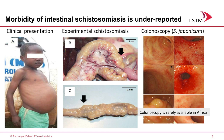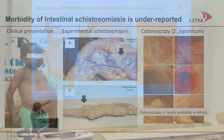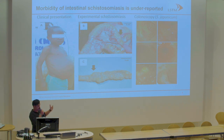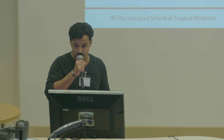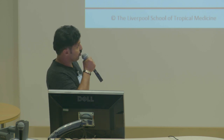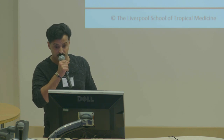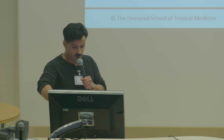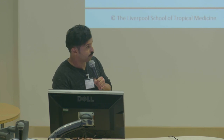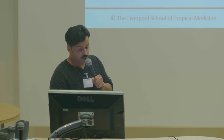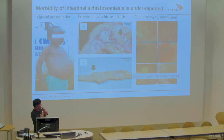Morbidity of intestinal schistosomiasis is underreported. You can see here the clinical presentation of a child infected with intestinal schistosomiasis. When you do experimental schistosomiasis in animals, you can see fibrosis in the intestine as a result of egg entrapment in the tissue. In China, they do colonoscopy and you can see bleeding used as an indicator of morbidity, and also fibrotic blobs.